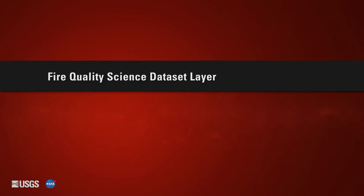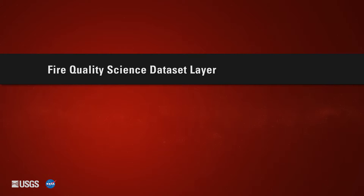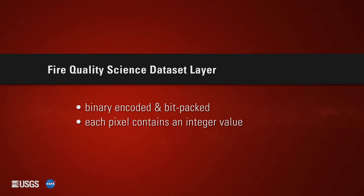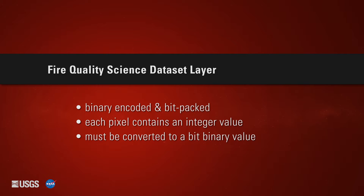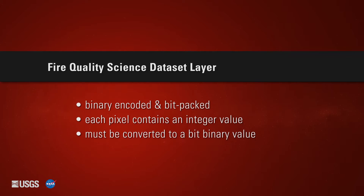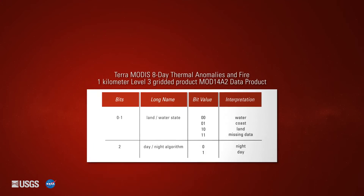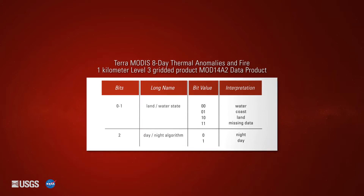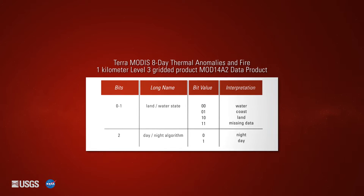The Thermal Anomalies and Fire Quality Science dataset layer is binary encoded and bit-packed, meaning each pixel in the QA layer contains an integer value that must be converted to a bit binary value for interpretation. The bit string interprets various parameters as shown by this chart.